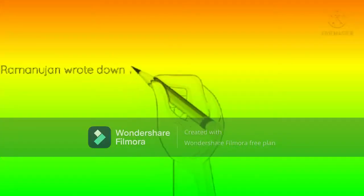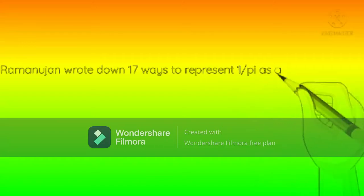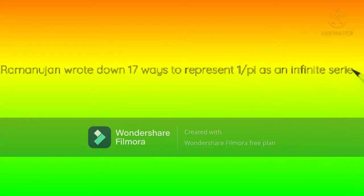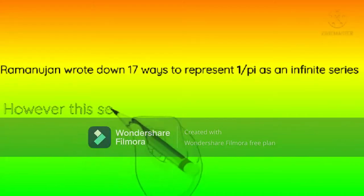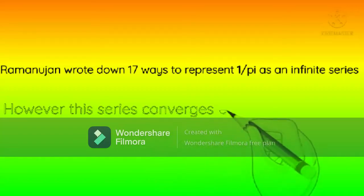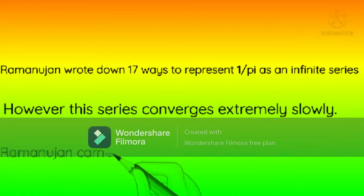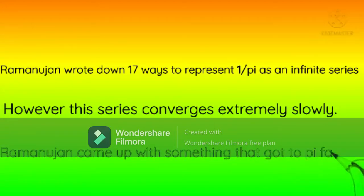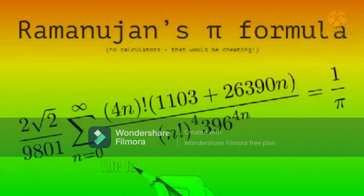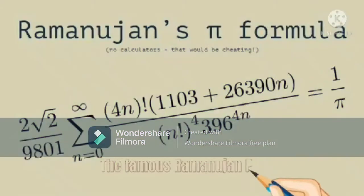Ramanujan's Pi Formula: At first, he wrote down 17 ways to find pi. But this was a very large series. So he discovered a new series which could find pi much more easily. This series gets you to the value of pi after the first term and adds 8 correct digits per term.